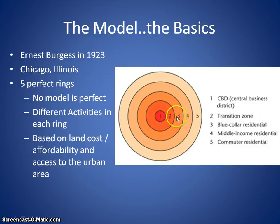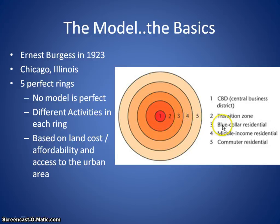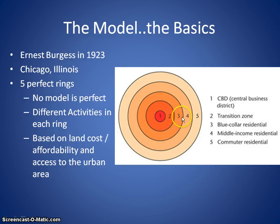Ring two is called the zone of transition because we're transitioning from industrial work into residential areas, and you see a movement back and forth of people between rings two and three depending on their position in the workforce and their ability and need to access those spaces. Ring three is called the area of blue-collar residents — lower-income workers, most of whom work in ring two. They need to be close by to access those activities, typically don't have personal transportation, so they rely on public transit. It's also characterized by high-density housing such as apartment buildings and high-rises.